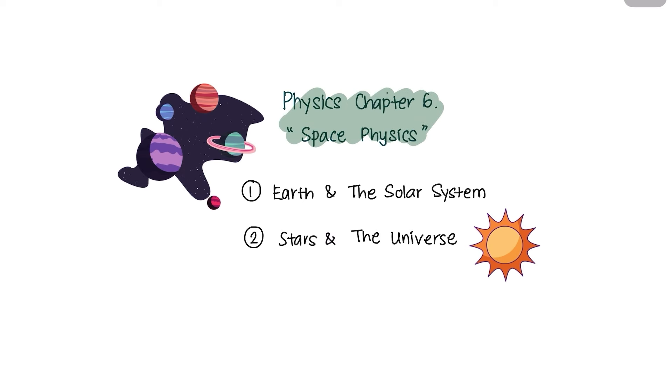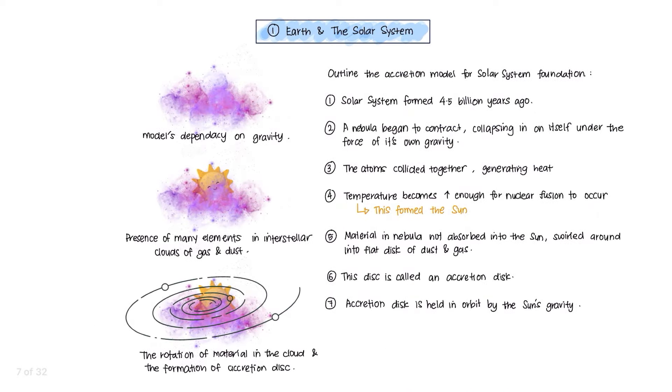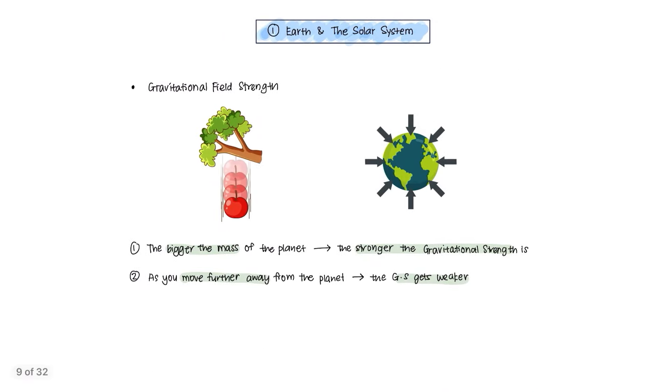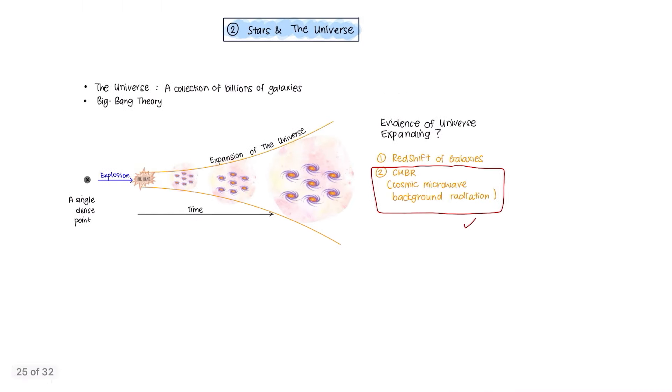In this chapter, we will focus on two fundamental concepts. First, Earth and the solar system. Second, stars and the universe.